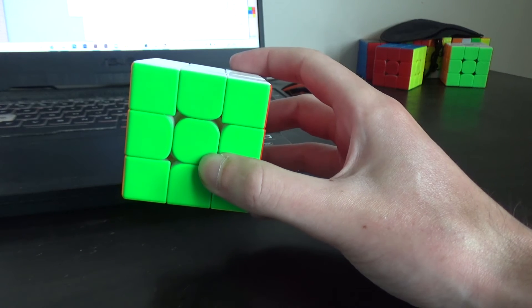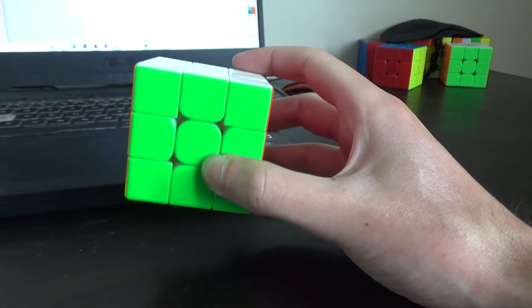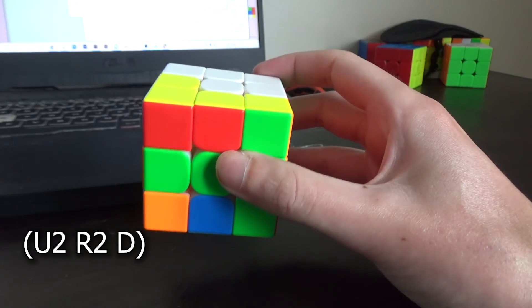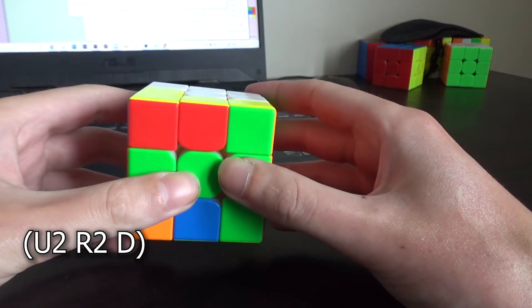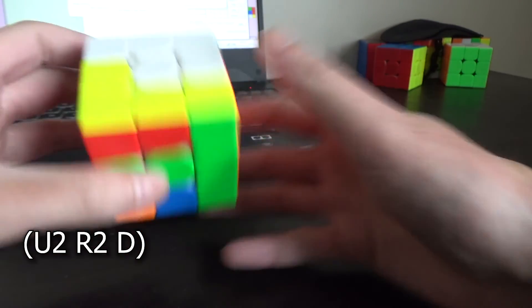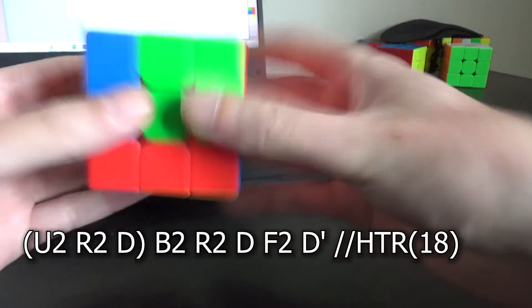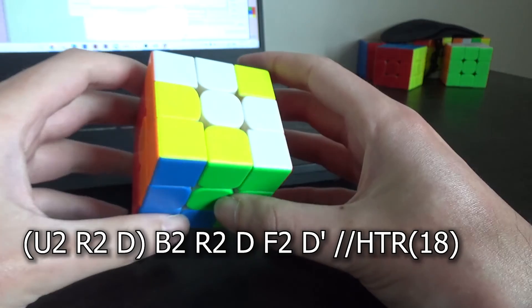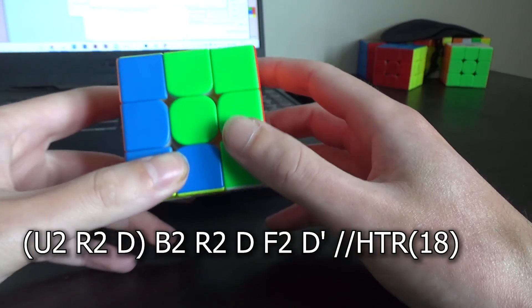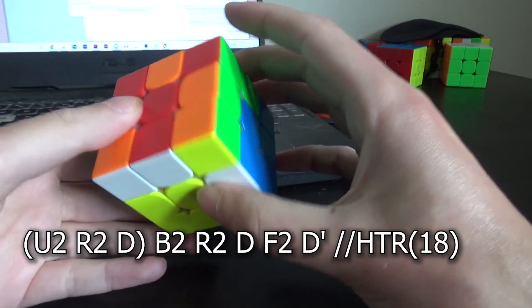But turns out that there was a findable 23 if I had started with a different corner solution. So if you start with U2 R2 D and then switch to the normal scramble you get this 5 more moves to HTR: B2 R2 D F2 D prime. And that's one move shorter than the HTR I had so it's 18 moves, and turns out there's a 5 move finish from here which is R2 B2 D2 L2 F2.